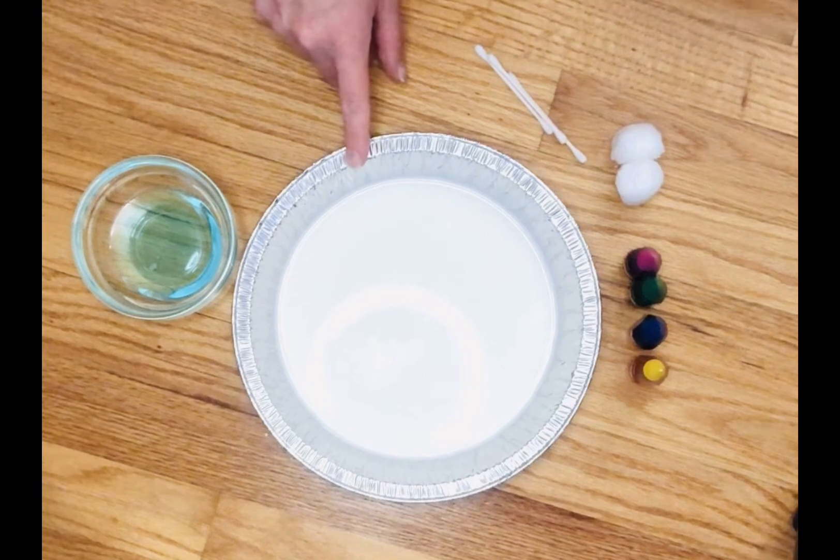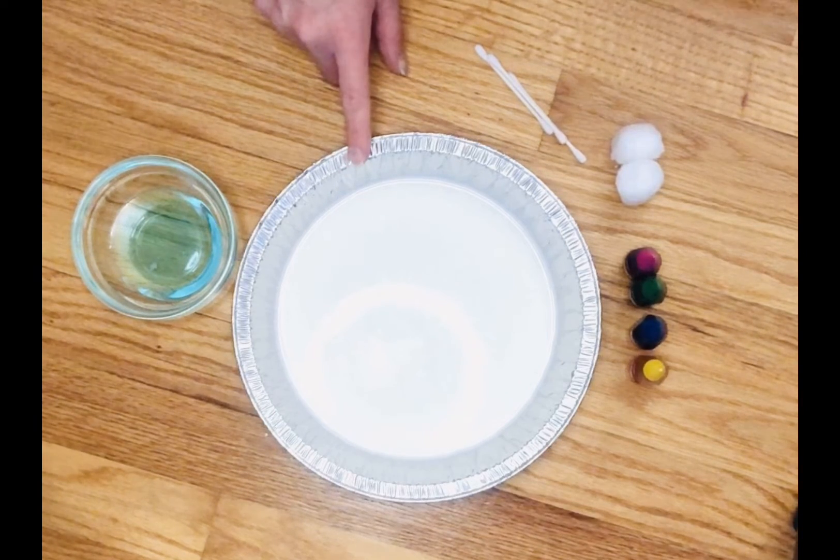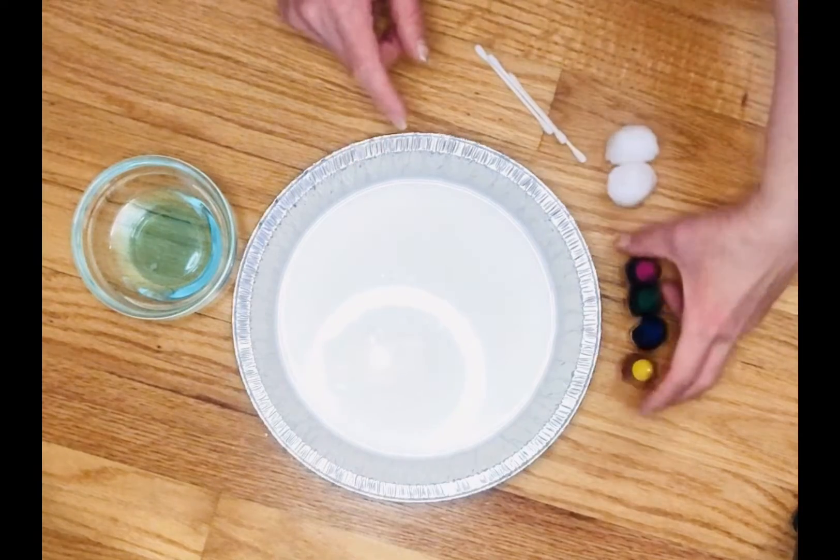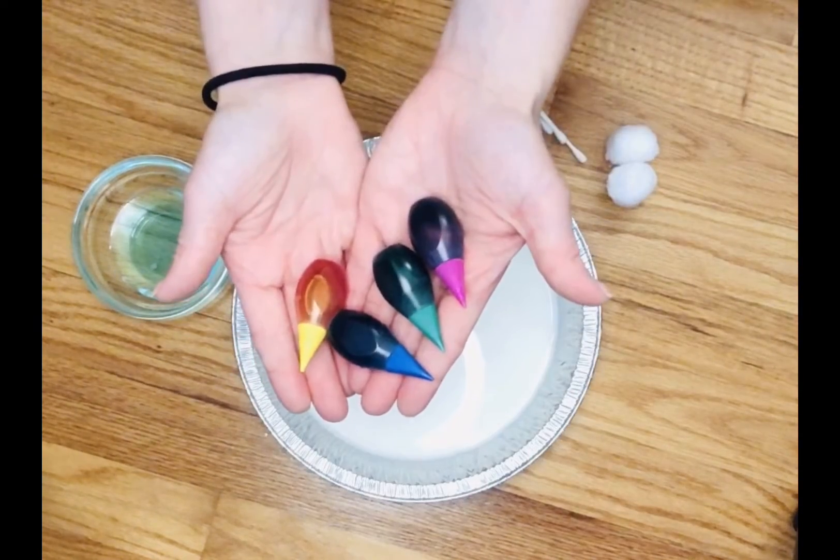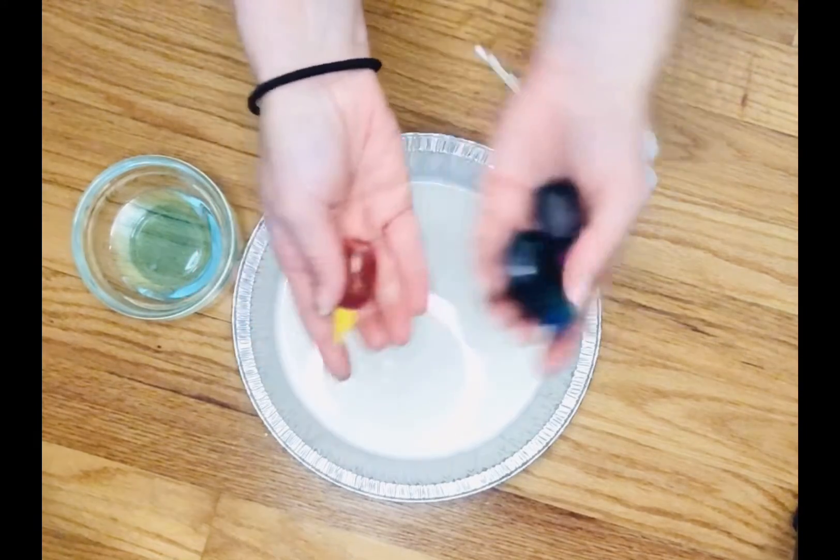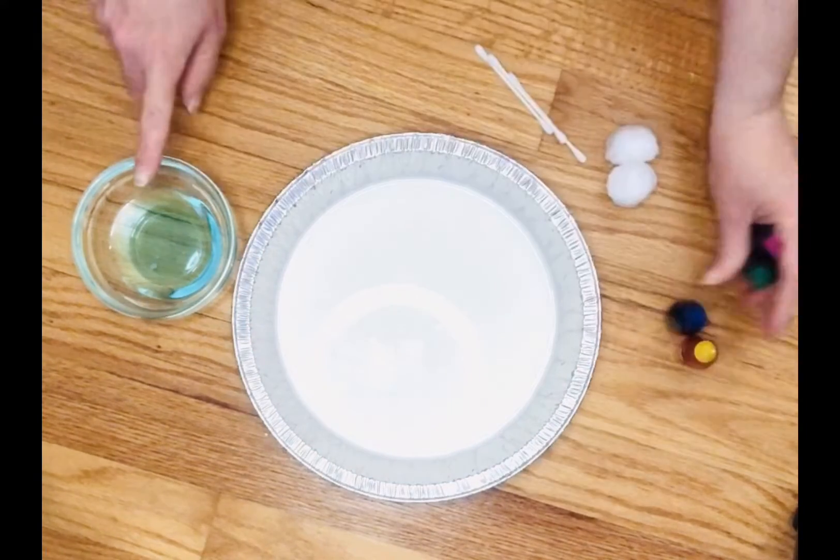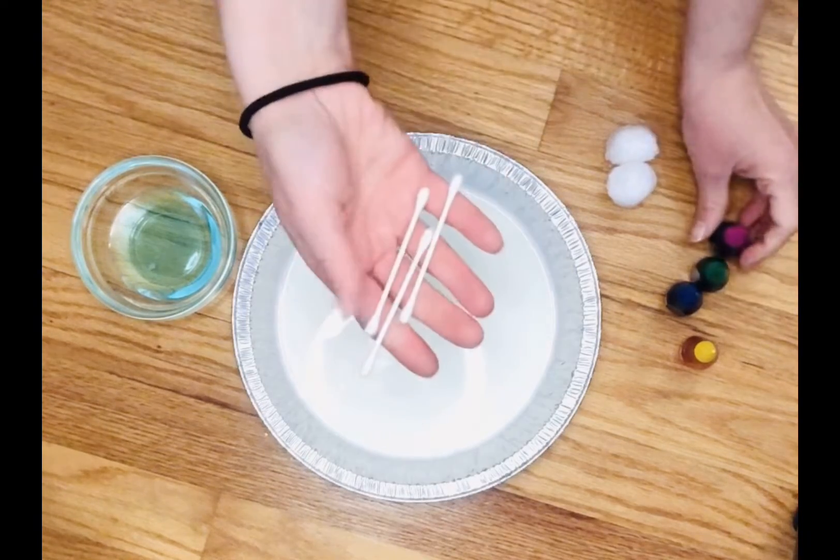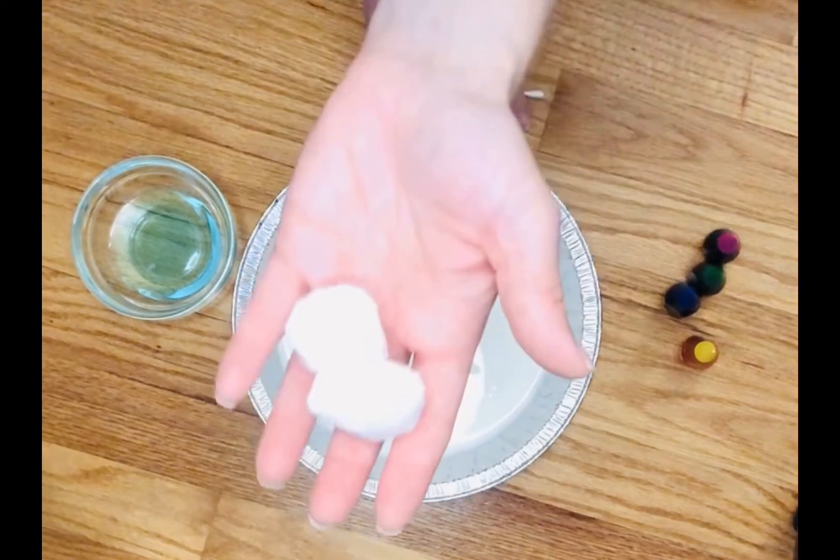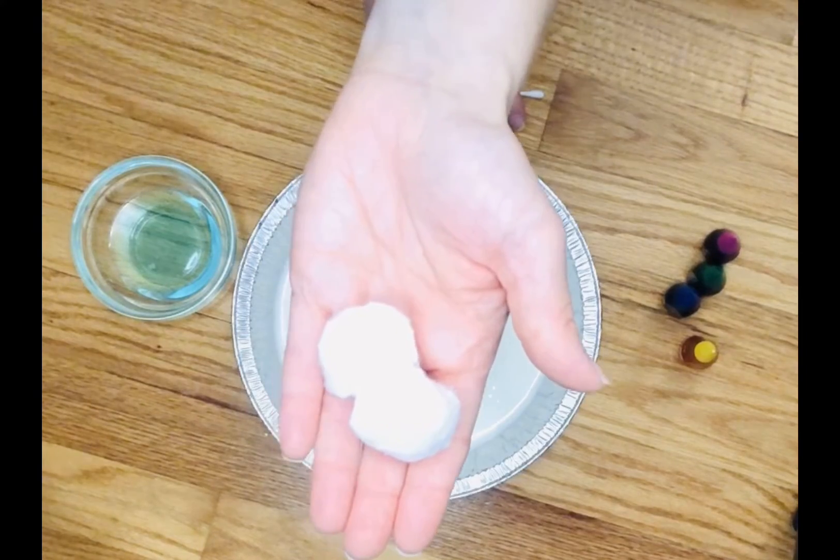Whole milk works best, but I didn't have any at home so I'm using 1% milk. Then you will need a variety, a selection of different colored food colorings. You will need a bowl of dish soap, a few q-tips, and you can even use a couple of cotton balls.